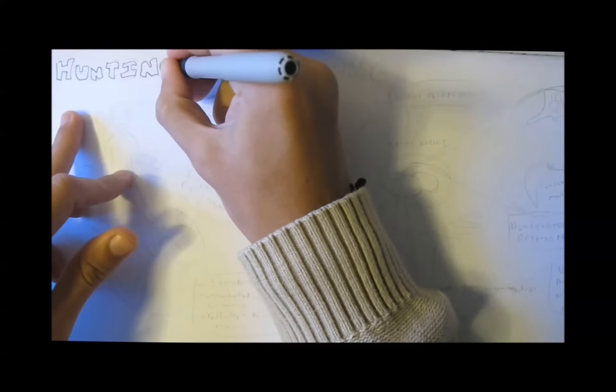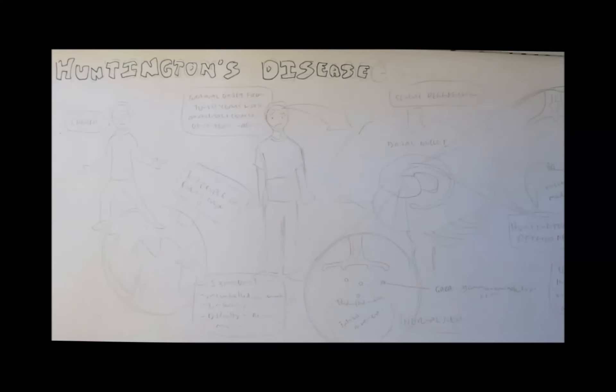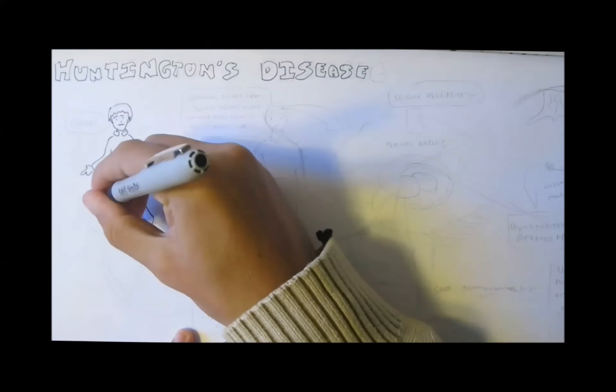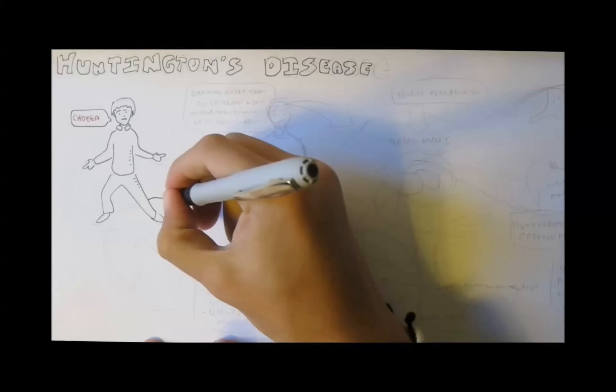That's all for Parkinson's. Next, we'll talk about Huntington's. Huntington's disease is also known as chorea, Greek for dancing, because of the associated symptoms.